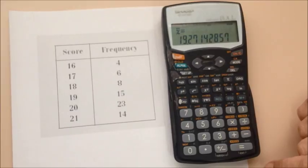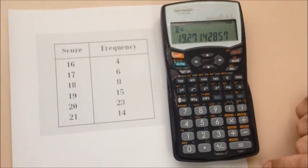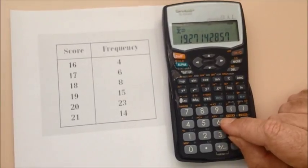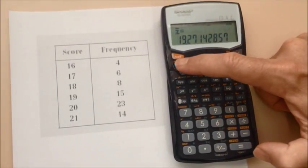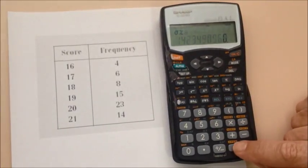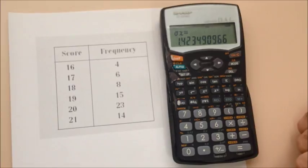The standard deviation, which gives us an idea of how things are spread out, is also here, but that's above the six button, sigma X. So again, it's a green button. So alpha, sigma X equals. That's the standard deviation.